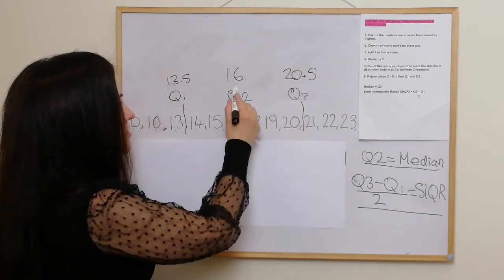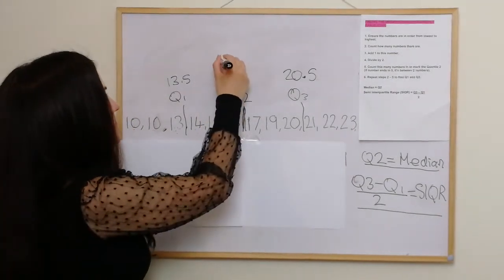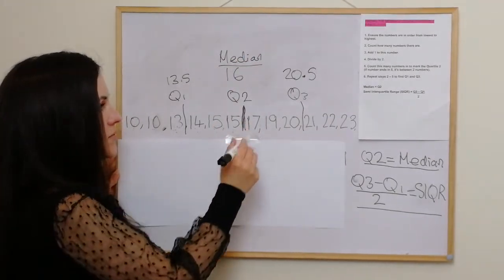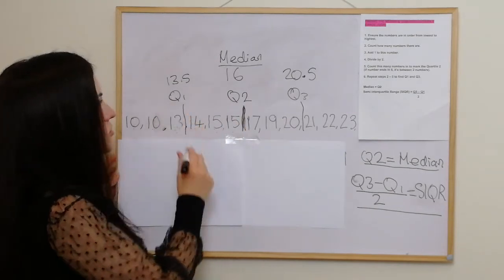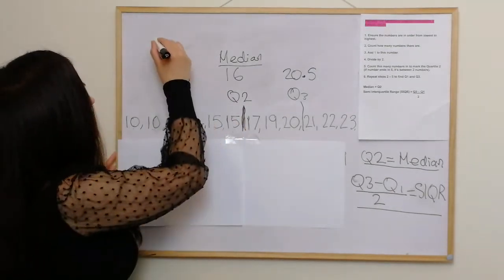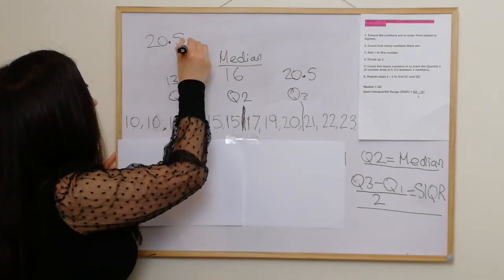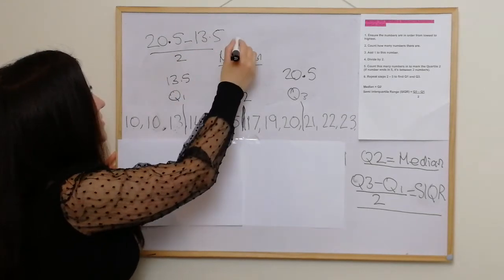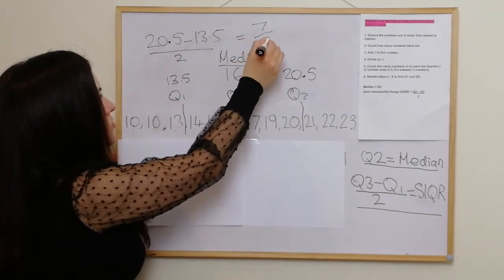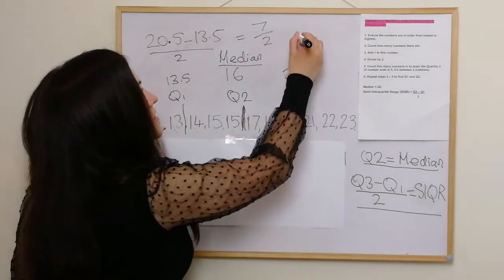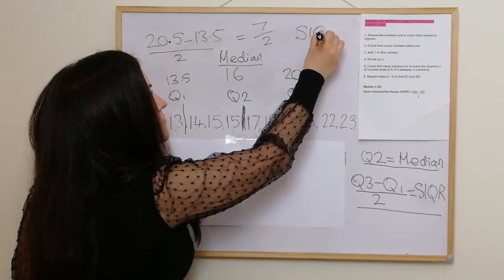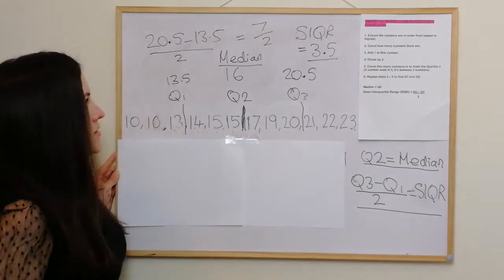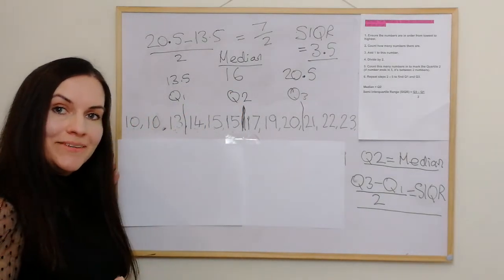Our median is Q2, which is 16. To get our semi-interquartile range, we do Q3 minus Q1 divided by 2: 20.5 minus 13.5 over 2, giving 7 divided by 2, which is 3.5. So the semi-interquartile range is 3.5. The median was 16 and the semi-interquartile range is 3.5.